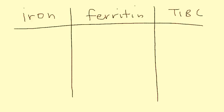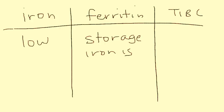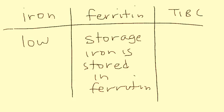Iron is the main element we're talking about, and it's the deficiency of iron that causes anemia. So when you have somebody with iron deficiency anemia, obviously the iron levels will be low. Now ferritin — when you think of ferritin, think of storage. Iron is stored in ferritin; it's the storage form. Ferritin is a group of proteins with a core of iron inside, and this iron is readily available for any body requirement.